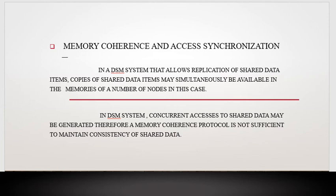The third issue is memory coherence and access synchronization. It is related to accessing data. Our data is stored on a number of systems in a distributed shared memory system. When we access data on one system and apply changes to that data, there is a problem of coherence — those changes must be applied across the whole network.